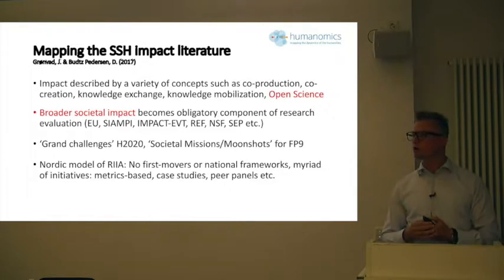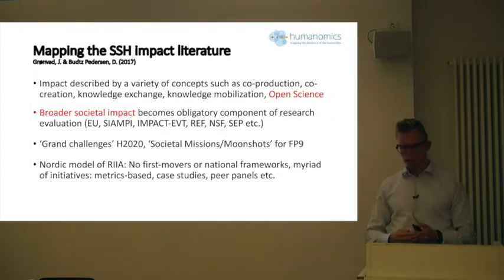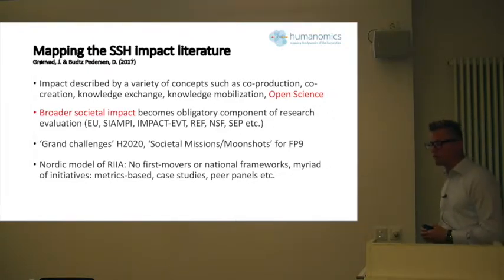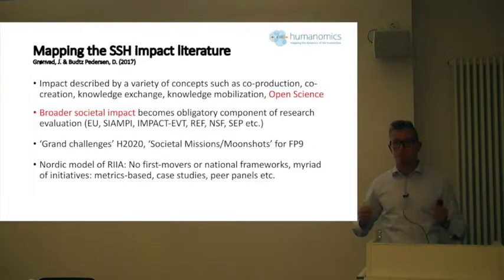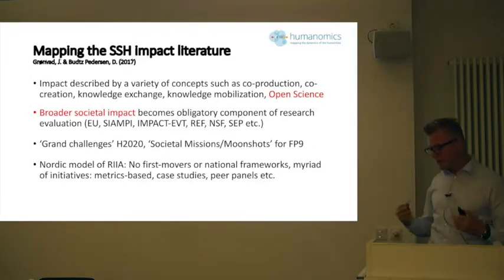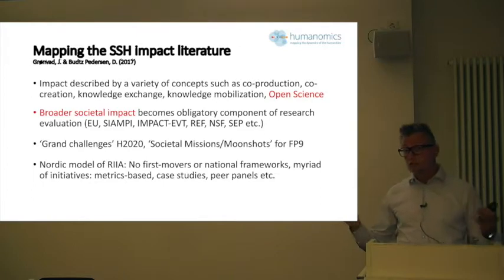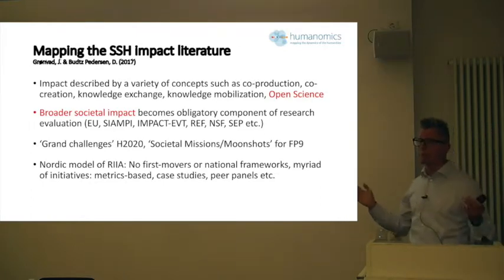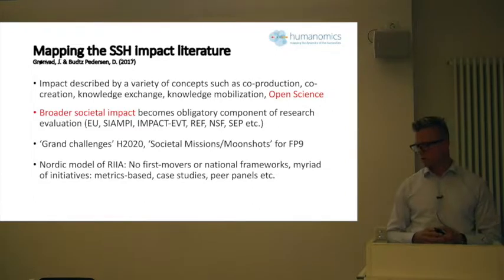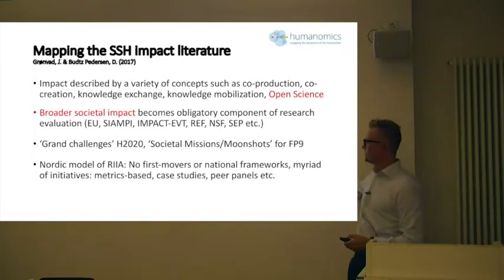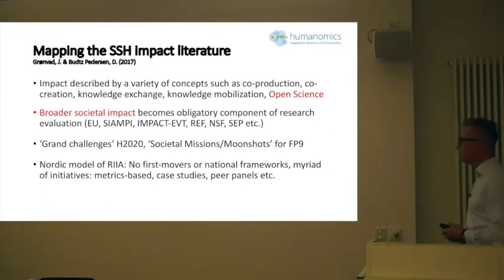So we should have an open-minded approach in the social sciences and humanities moving forward. The idea of actually mapping societal impact becomes an obligatory component in quite a lot of different research evaluation exercises. We've already heard a little bit about the Shambi model, the idea of productive interactions, but you will find the same at the NSF in the US, in the Netherlands, in the Dutch community, in Norway — they just yesterday published the national evaluation of the broader impact of social science. It kind of repeats itself all over the continent. Talking from a Nordic perspective, we really do not have any first movers or a national framework like the UK's REF system, which you're all familiar with.